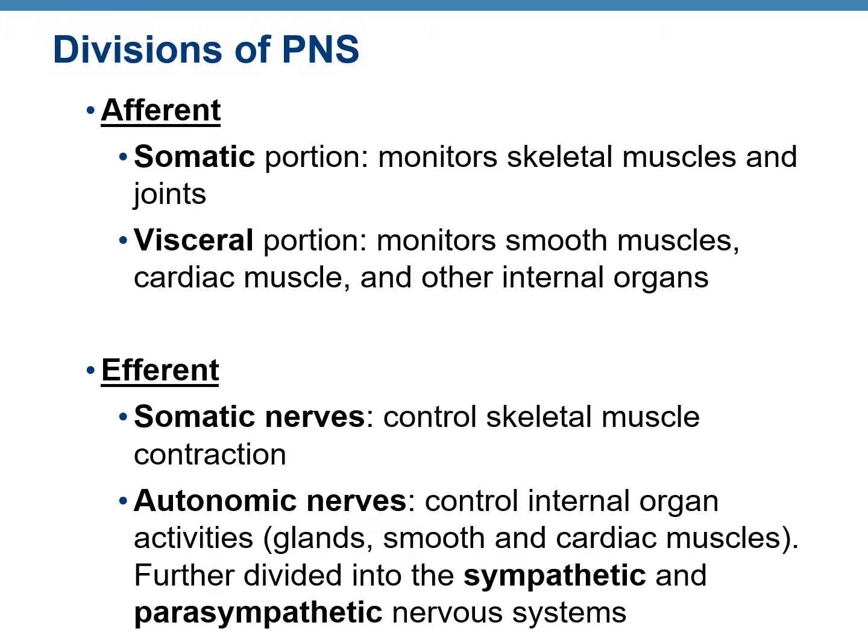The afferent and efferent divisions can be further classified based on whether their innervation is voluntary or involuntary. The afferent division is subdivided into the somatic portion, which monitors skeletal muscles and other voluntary areas, and the visceral portion, which monitors smooth muscles, cardiac muscles, and other involuntary areas. The efferent division is subdivided into somatic nerves, which control voluntary skeletal muscles, and autonomic nerves, which control internal organs and other involuntary glands. The autonomic nerves are further divided into the sympathetic and parasympathetic nervous system.